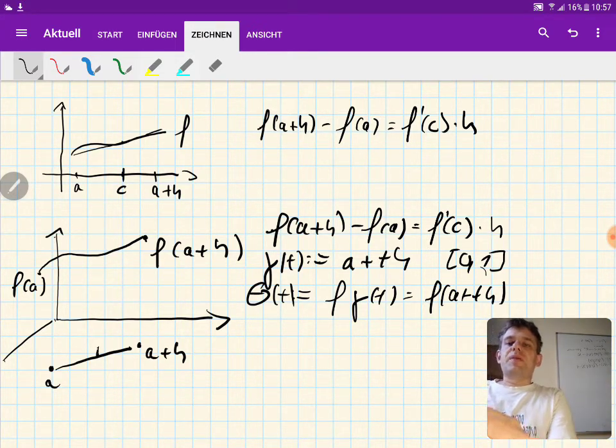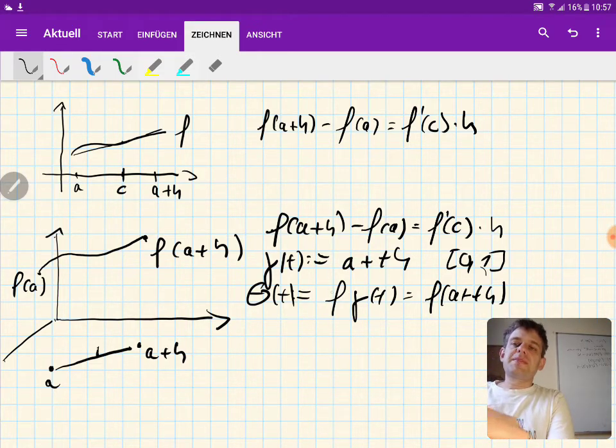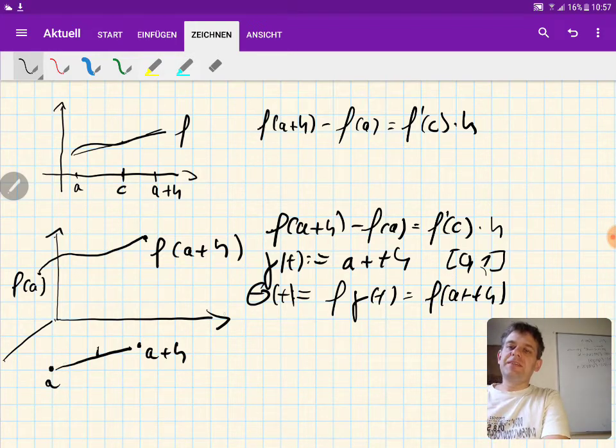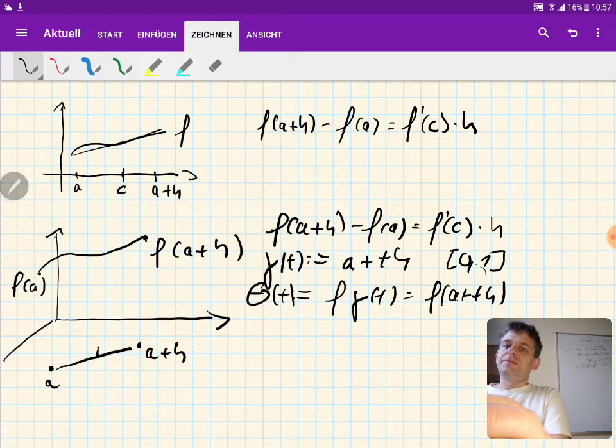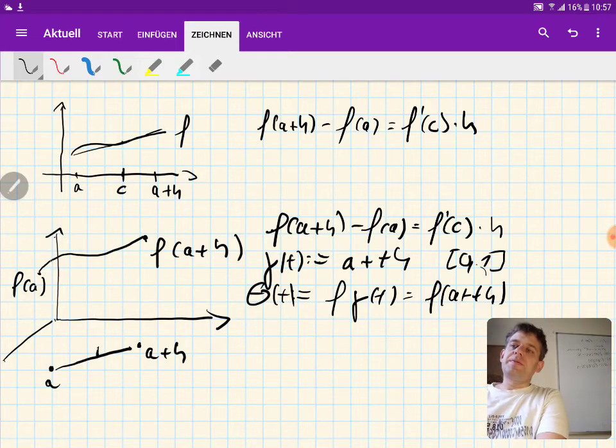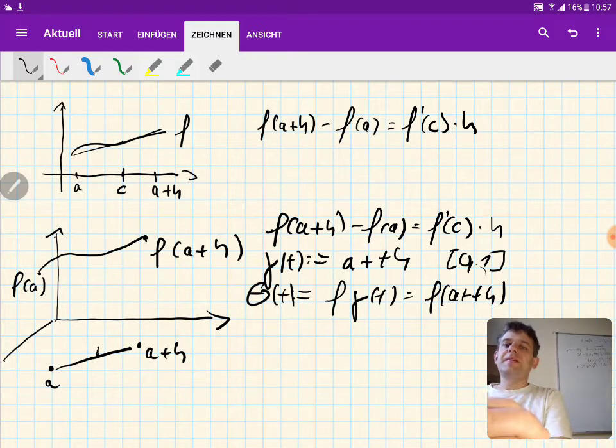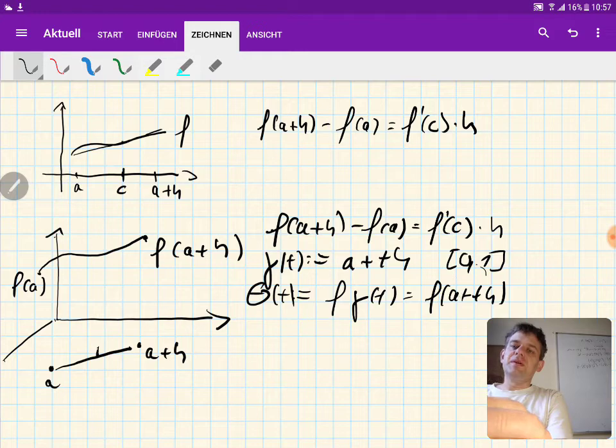And note that this function theta is a function from R to R, because it starts here on the closed interval zero to one, which is in R, and it assumes values in R, because this y-axis is nothing but a copy of R of course. So this is a function from R to R.